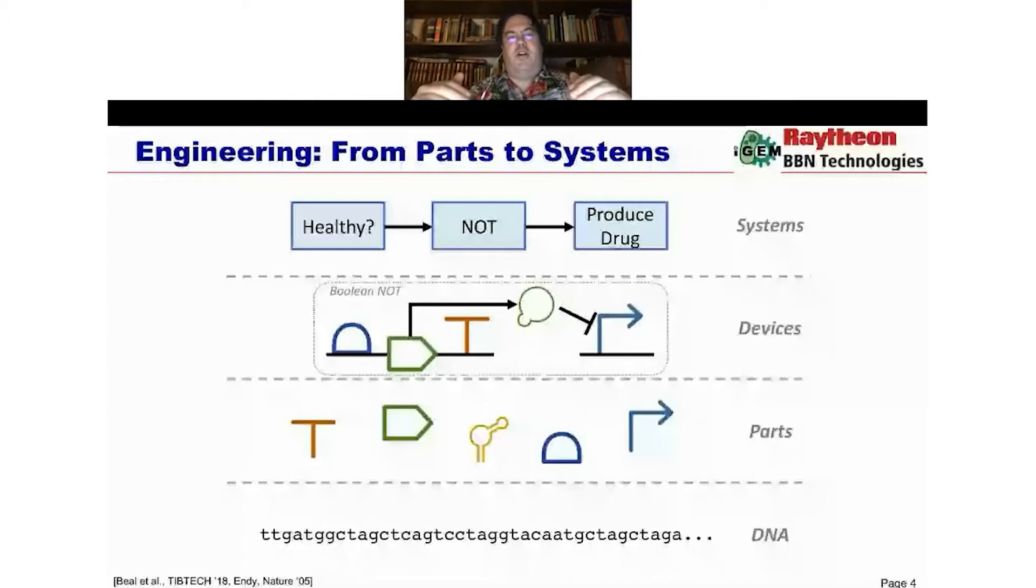We want to think about connecting together modules like that. But in order to get between parts and modules, we need to have compositions of parts into devices like this arrangement here of a production cassette of a ribosome binding site, a coding sequence for a protein and a terminator. This little production set makes a protein that then represses a promoter. And together that collection can be thought about as a device that's an implementation of a Boolean NOT function, a logical NOT that we'd need in that system above. This is a simple example of an information processing device.